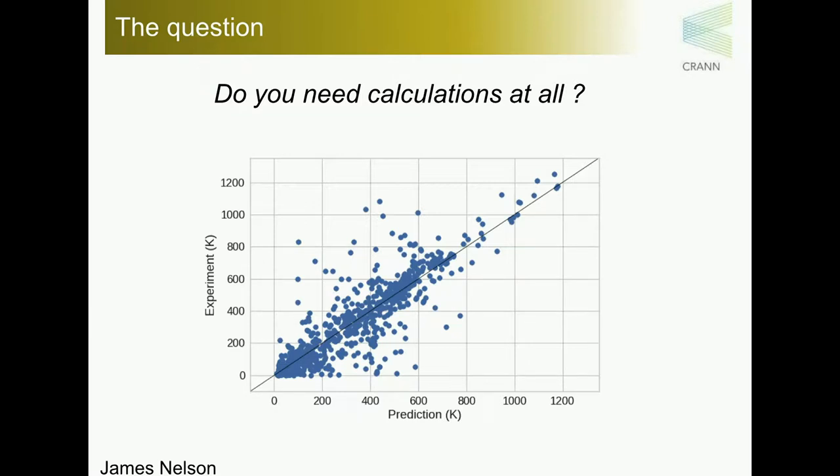So what I'm plotting here is a machine learning model to predict the Curie temperature of ferromagnets. Every point you see here is an experimentally known ferromagnet. There are about 2,500 of them. And as you see, this machine learning model predicts on average with an accuracy of 80 Kelvin. 80 Kelvin is better than what you can do from DFT if you don't know the answer.